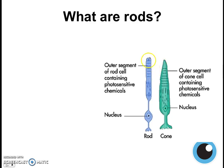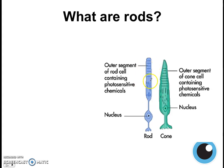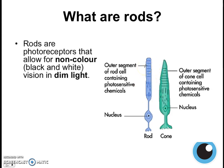Next, we look at rods. Rods are actually cells — modified cells specialized for detecting light. They have a nucleus and an outer segment which contains the chemicals that make them photosensitive. Our rod cells also have some pigments that help to detect light. Rods are photoreceptors that allow for non-colored vision, or black and white vision, and they allow us to see even in dim light, so they are a lot more sensitive than cones.